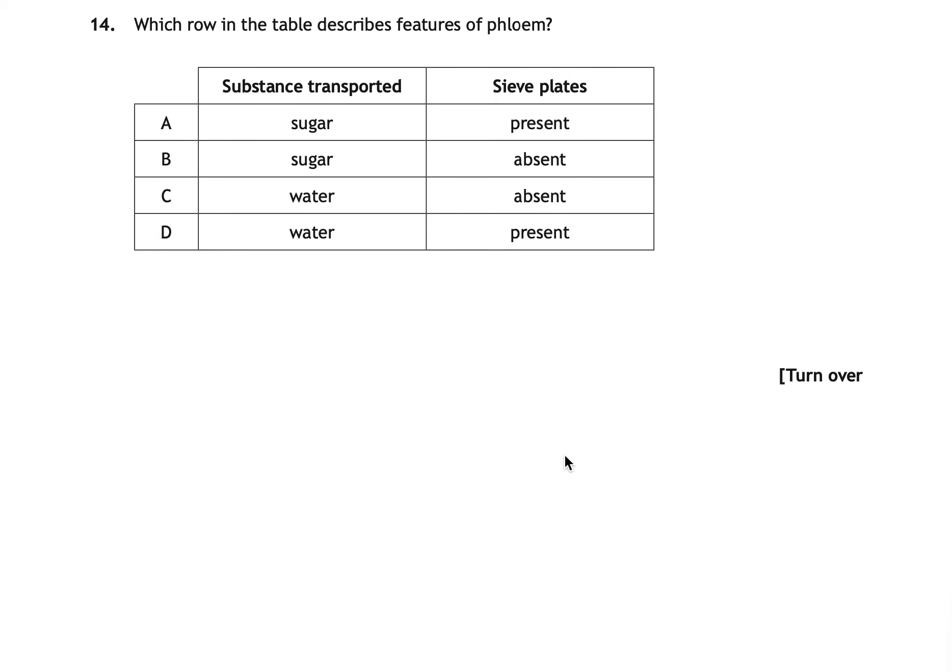Question fourteen asks which row in a table describes features of phloem. The correct answer is A. Phloem transports sugar — xylem transports water — and phloem also contains sieve plates, which are not present in xylem.